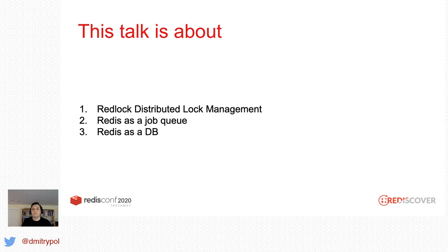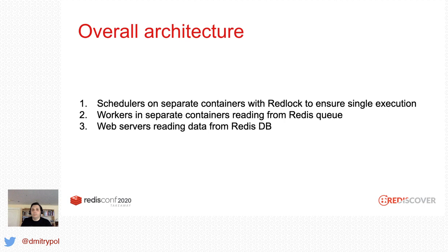The overall architecture of my application uses multiple containers. There's a set of containers that run schedulers, and Redlock with Redis ensures that only a single scheduler can execute at any given time — that's the distributed lock management part. Separately, I have workers in different containers reading from Redis as a queue. And lastly, I have web servers that serve data by simply reading from the Redis database.